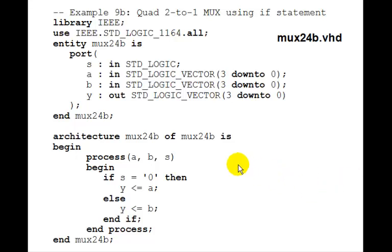The easiest way to do it, however, is to use the if statement that we had for a 2 to 1 MUX. And if you remember, this is exactly the if statement we had for the 2 to 1 MUX. If s is 0, then y is a, else y is b. But in that case, a, b, s, and y were all just a standard logic.